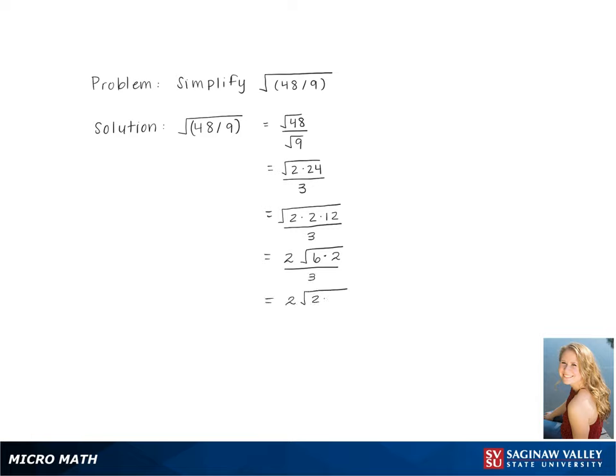Breaking it down inside even further, 6 is 2 times 3, and then times the other 2. Pulling out the other pair of 2s gives us 2 times 2 square root 3 over 3, which gives us 4 square root 3 over 3 as our final answer.